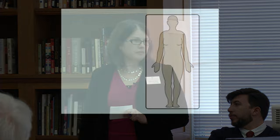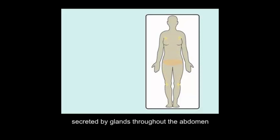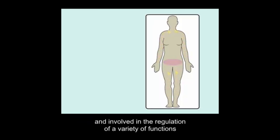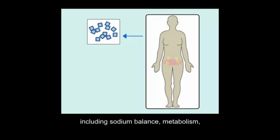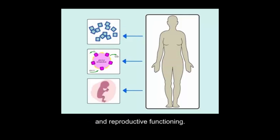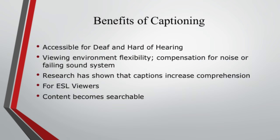We're going to do a little exercise and let you watch a video to see if you can figure out what it's about. This is an actual example used in a class. The video discusses steroid hormones — chemical substances secreted by glands throughout the abdomen, involved in the regulation of sodium balance, metabolism, and reproductive functioning. You might also have had difficulty understanding the voice — it's a computerized voice, and we found it very difficult to hear the audio when doing the captioning. This is one reason captioning is important to add from the onset, because you never know if your sound system will be working correctly.